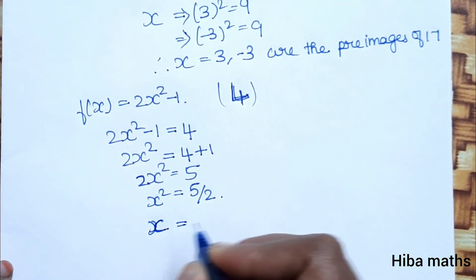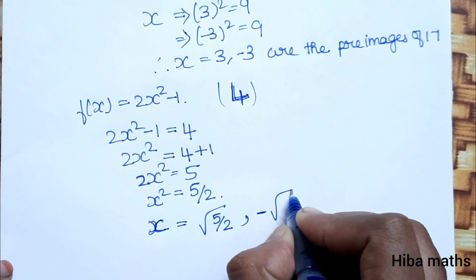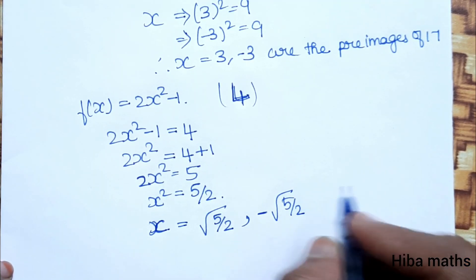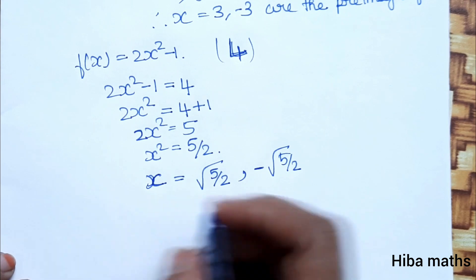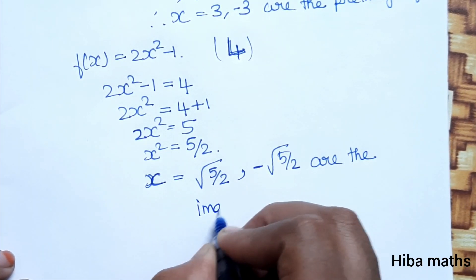Taking the square root, x equals plus or minus root 5 by 2. So the two values are positive root 5 by 2 and negative root 5 by 2. These are the preimages of 4.